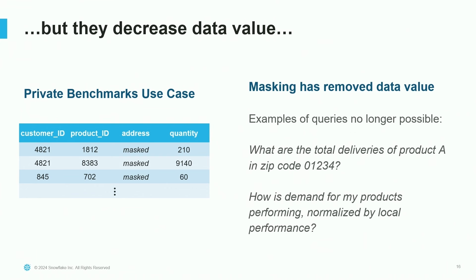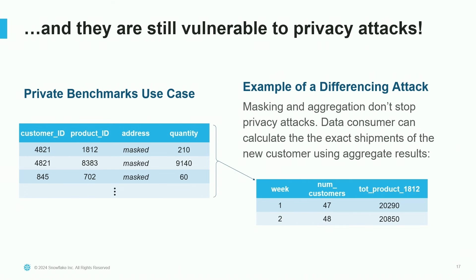Let's see how these two privacy rules perform. Looking more closely, they're not really a good fit. First, they decrease the value of the data — because we've masked the address field, the data consumer can no longer do geography-based analyses. If you're customer A, you want to understand how your products are performing within your local market. If you've grown by 10% but the local market has grown by 50%, you're not doing well — but customer A can't understand this because they can't access the address field.